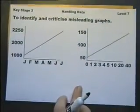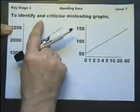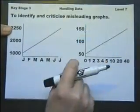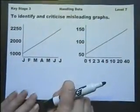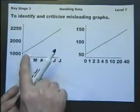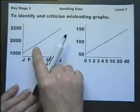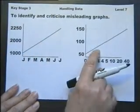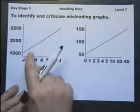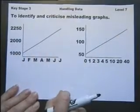In Level 7, we're expected to be able to identify and criticize misleading graphs. So, just glance at these two graphs. They seem to be a steady increase of information, a constant increase of information, quite a reasonable increase of information.